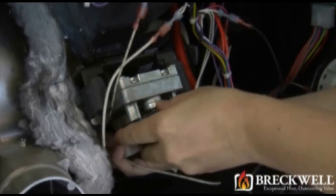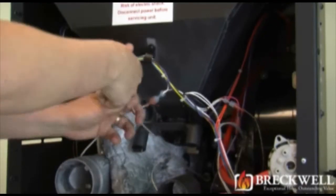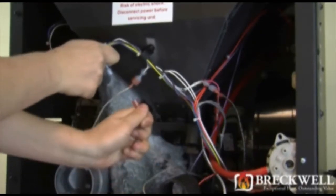While supporting the auger motor with one hand, use your needle nose pliers to remove the retainer clip. The auger motor should then drop down free from the auger drive shaft.